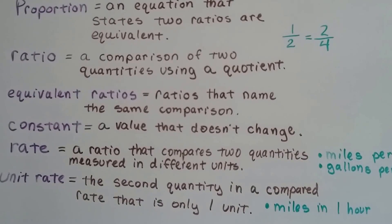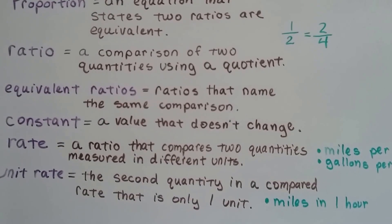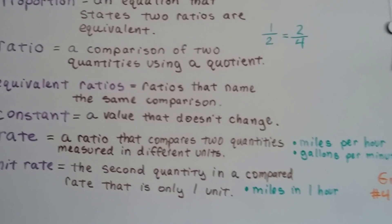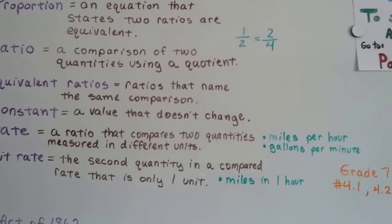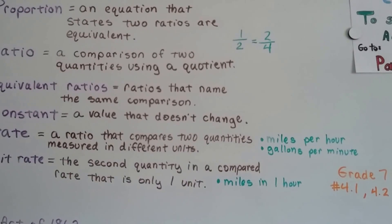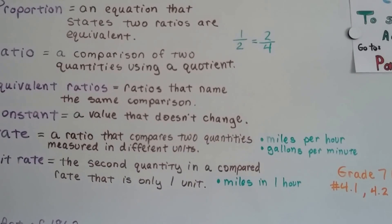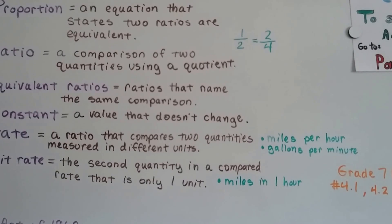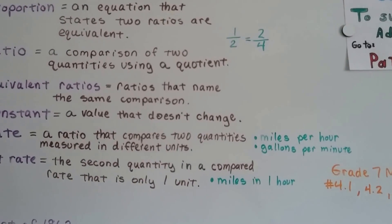A constant is a value that doesn't change. A rate is a ratio that compares two quantities measured in different units, like miles per hour or gallons per minute. A unit rate is the second quantity in a compared rate that's only one unit, like miles in one hour.